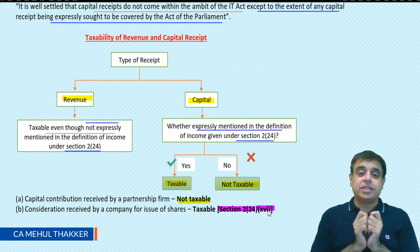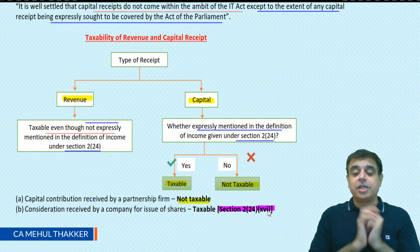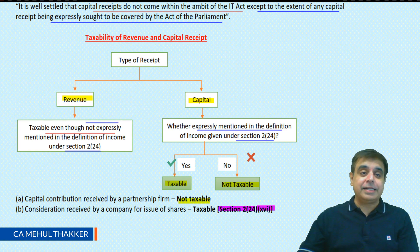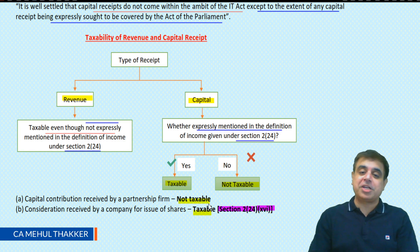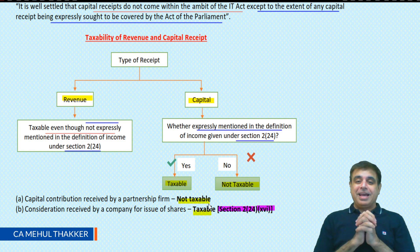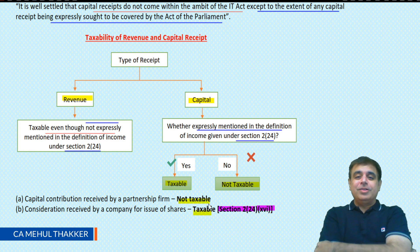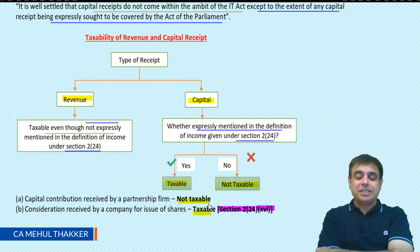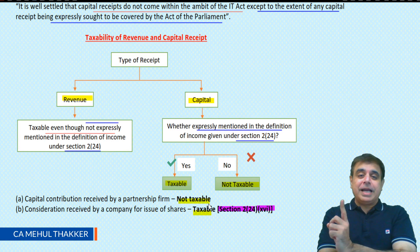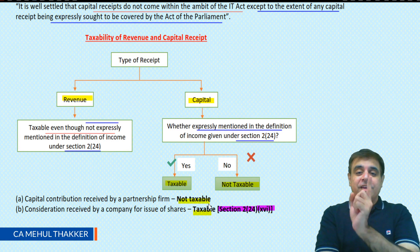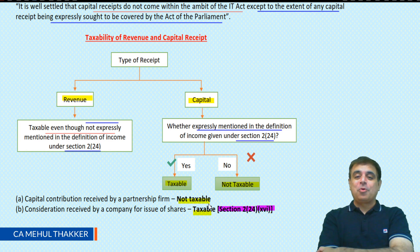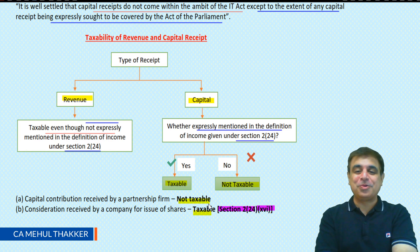If certain conditions are satisfied under section 56, sub-section 2, then the consideration received by a company for issue of shares becomes taxable because it is expressly provided in the definition of income. So the key point to remember is that a capital receipt will only be taxable if it is expressly provided under the Act. Thank you.